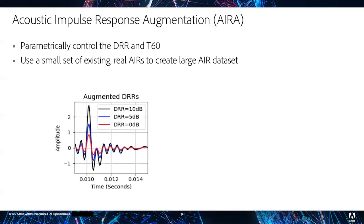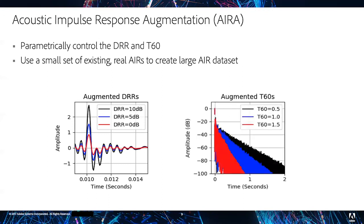We visualize our DRR augmentation on the left where we manipulate the amplitude of the direct path of an impulse response, and visualize the T60 augmentation on the right where we manipulate the decay of an impulse response on a log scale. Let's dive into these details further.